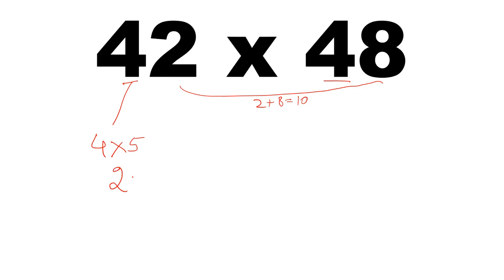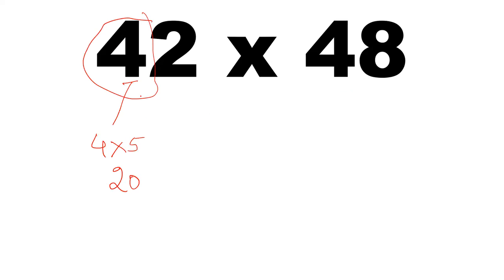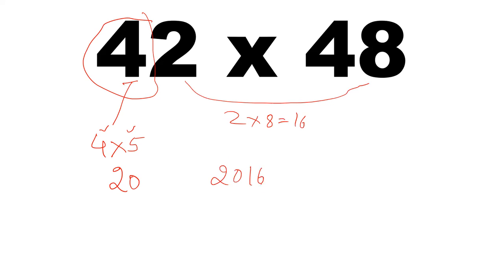So 4 into 5 is 20 — write that down. Now multiply the unit digits: 2 into 8 is 16. Write it down: 20, 16. So the product of 42 and 48 is 2016.